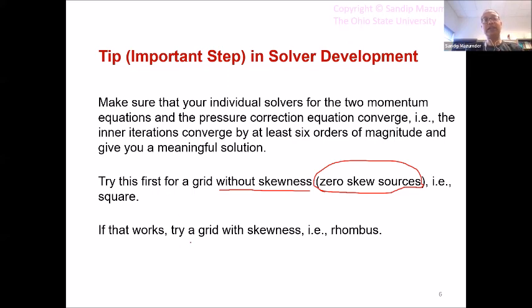And first make sure that all your solvers are working for this Cartesian mesh case, even though it's an unstructured formulation. If that works, then try the grid with skewness. In other words, the rhombus in this particular case. If these steps don't work, in other words, if your individual solvers don't work, don't even try outer loop convergence. It's never going to work. So that is an important step.